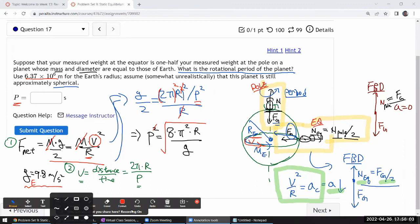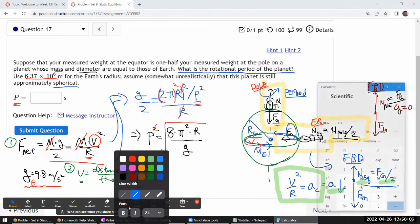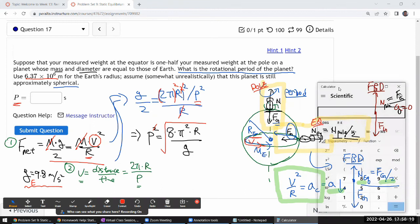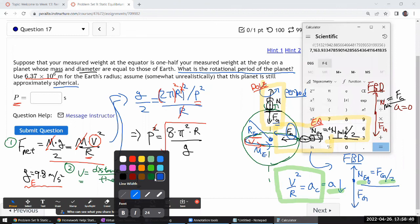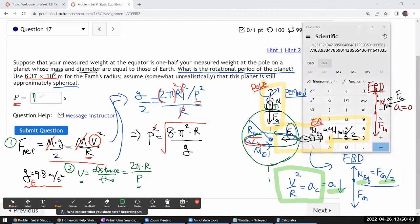I think I have all the numbers to plug in. I'll plug in the numbers and get the period in the unit of seconds. Just gonna type in my expressions here: 8 times π squared times the radius of earth, 6.37 times 10 to the power of 6 in basic SI units, divided by 9.8 meters per second squared. So that's the quantity under the square root. Let me take the square root. I have a period of 7,164 seconds.